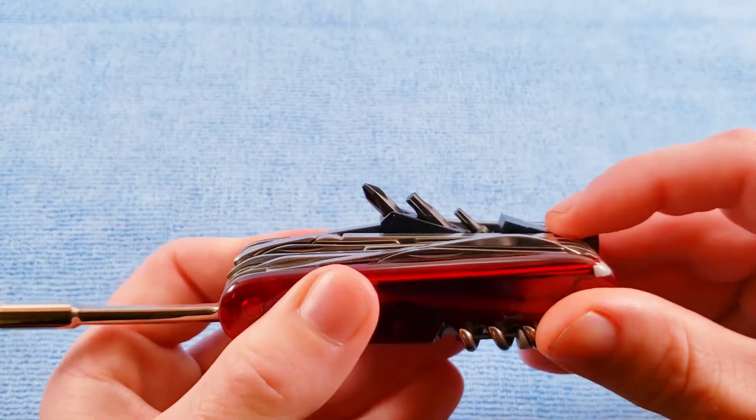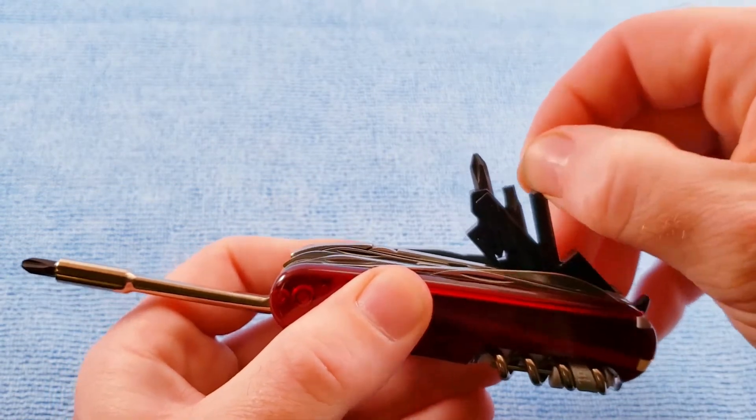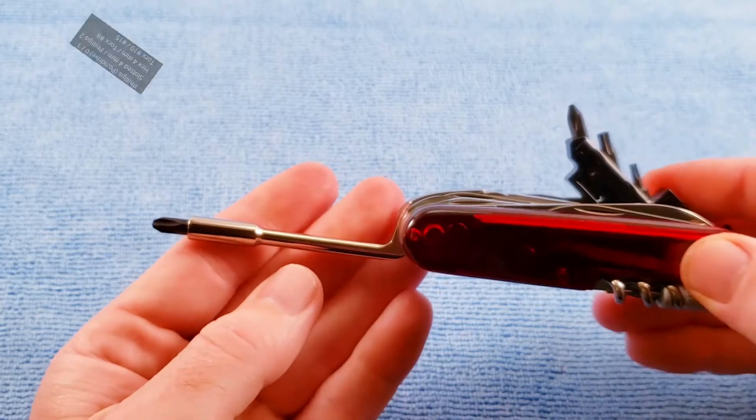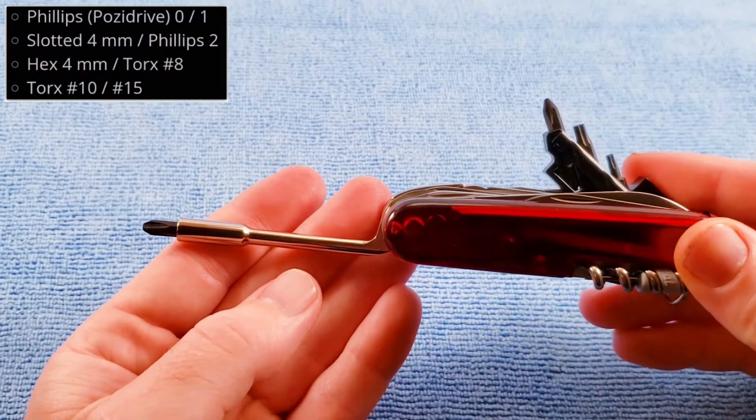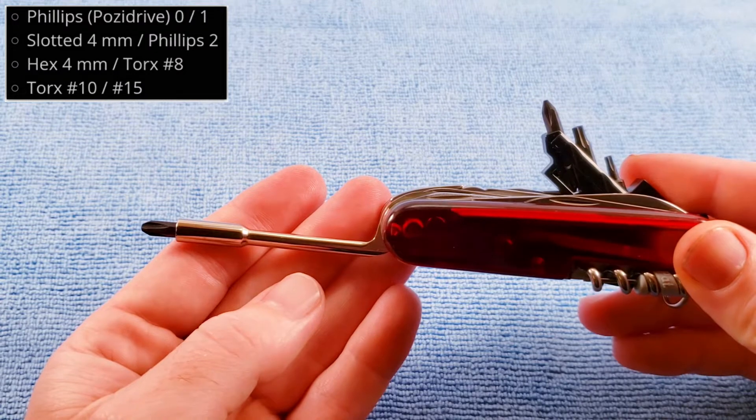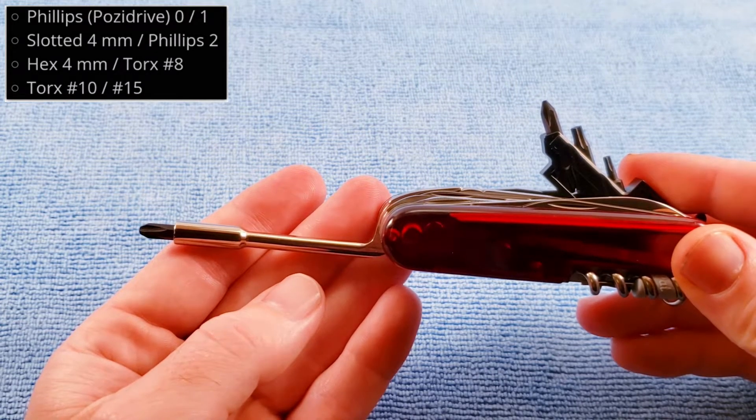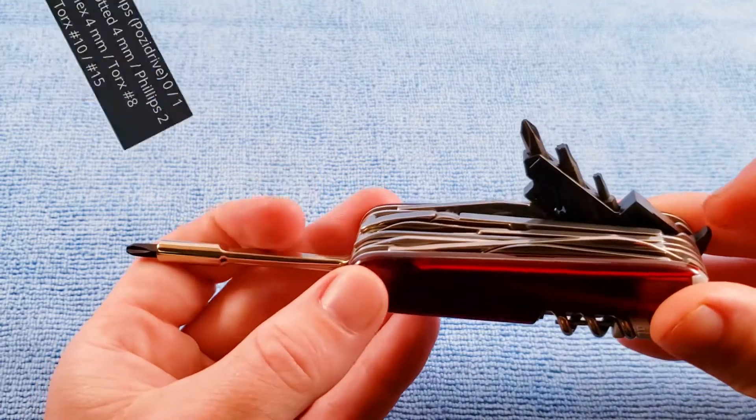And you have your additional bits in the tool holder. The sizes of bits included are a number zero, number one, number two Phillips. Four millimeter slotted regular, four millimeter hex. A number eight, a number ten, and a number twelve Torx.